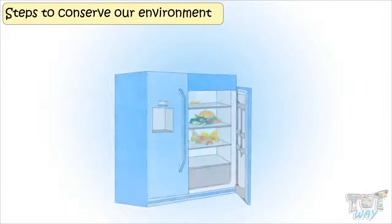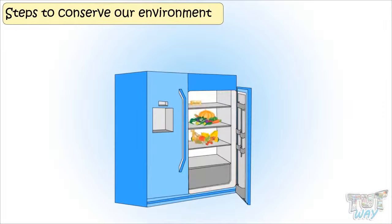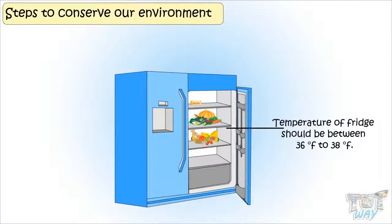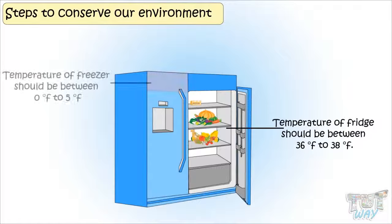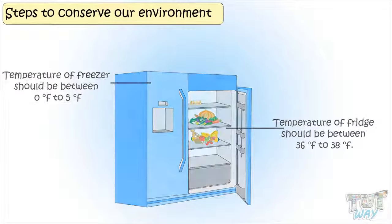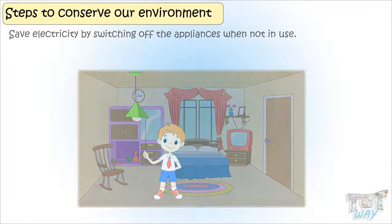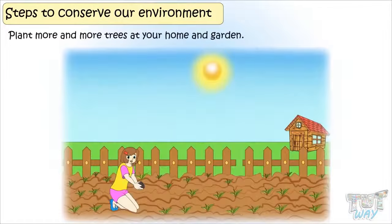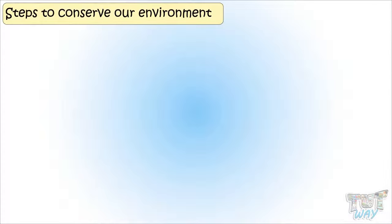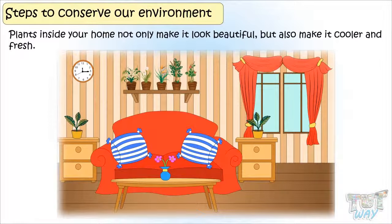Harvest rainwater for household uses. Do not use things that contain mercury, as mercury is not good for the environment. The temperature of your fridge should be between 36 and 38 degrees Fahrenheit, and the freezer between 0 and 5 degrees Fahrenheit. Save electricity by switching off appliances not in use — switch off the light, fan, and AC when you are not in the room. Plant more and more trees at your home and garden, as plants make your home look beautiful, cooler, and fresh.